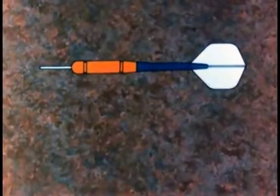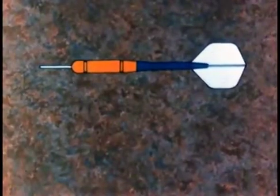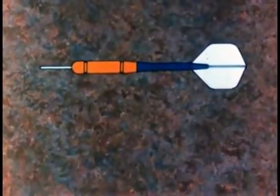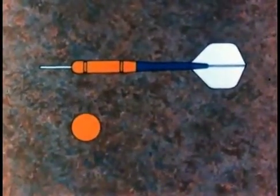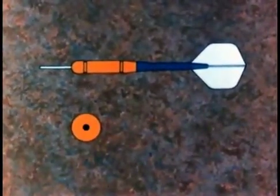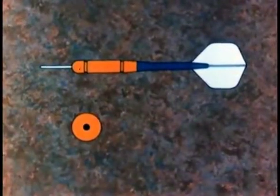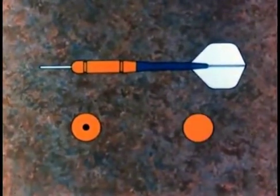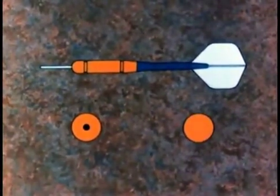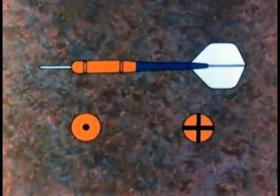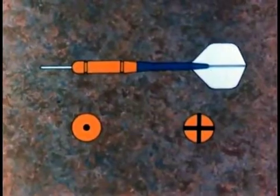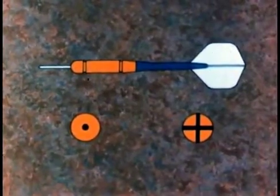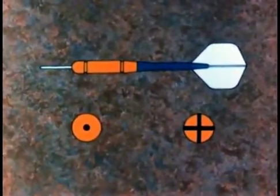You remember that dart notation for direction of current. Current toward you, you see the point of the dart. Current away from you, and you see the flights. We'll need this in a moment to explain this experiment.